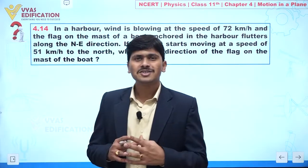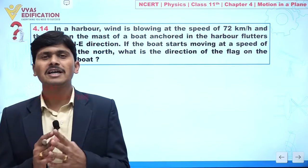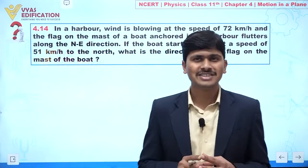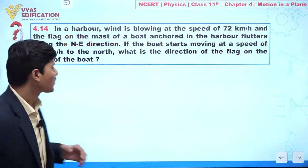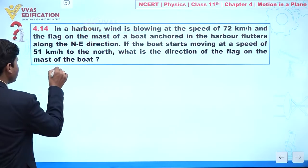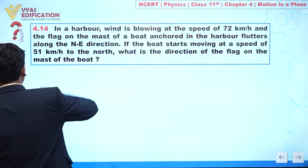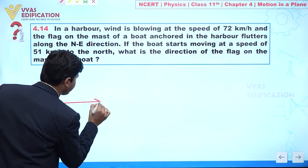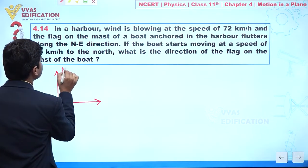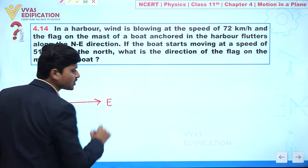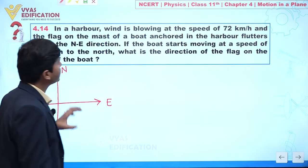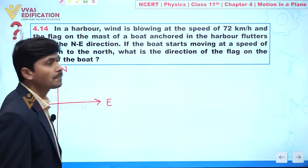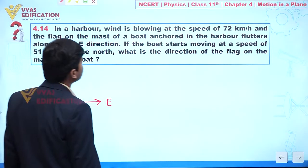The language is a bit typical but let us try to analyze the given situation. This is a very easy question, so listen carefully. Let's suppose this is the north direction and this is the east direction. Initially it is given that wind is blowing at the speed of 72 kilometers per hour.